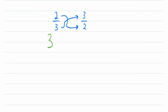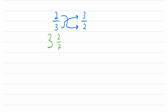But what if we had a mixed number? For example, the mixed number 3 and 2 sevenths. With a mixed number, we have an integer part and a fractional part. So how do we find the reciprocal of this? Well, if we could turn it into a normal fraction with a numerator and a denominator, then the process would be very easy. So that's exactly what we're going to do.